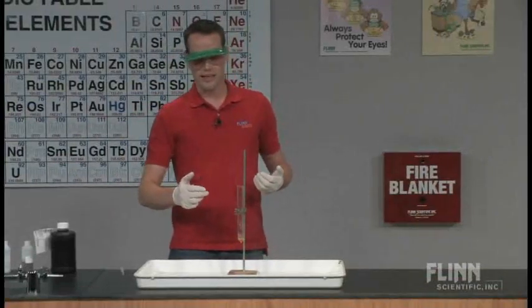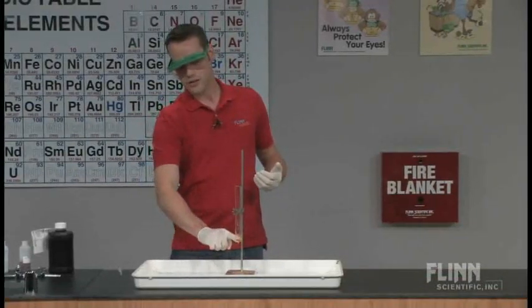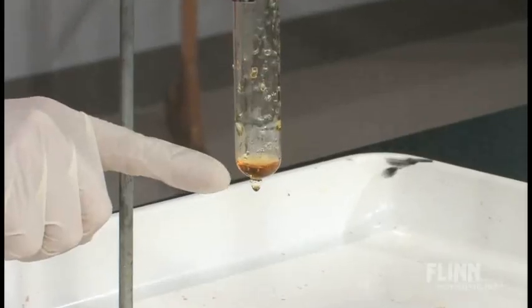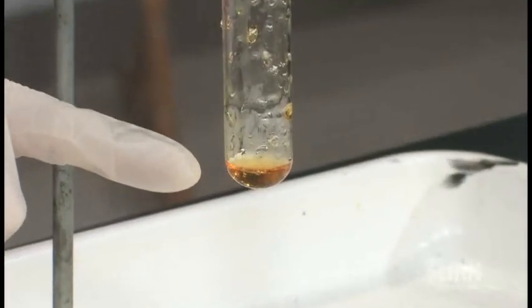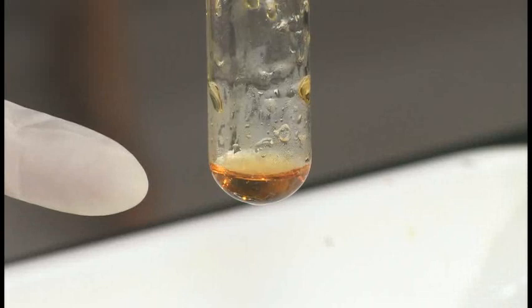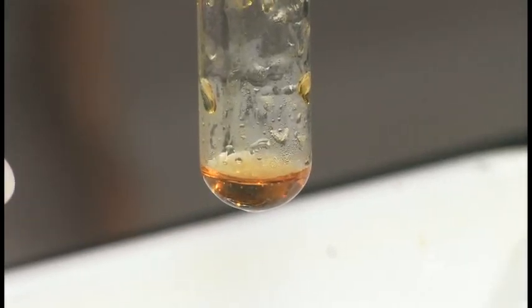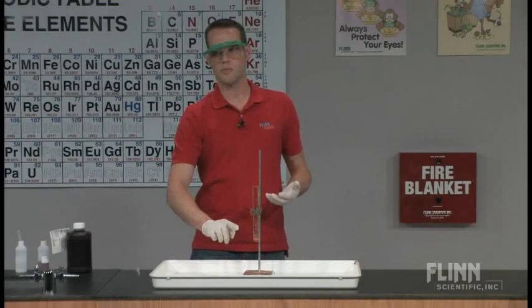And then the interesting thing is that if you look in the chemical splash tray and you can see a little bit of it down here, there's still that yellow color from the iron chloride solution beforehand. Now my students usually remark that this is a little bit lighter than it was before.